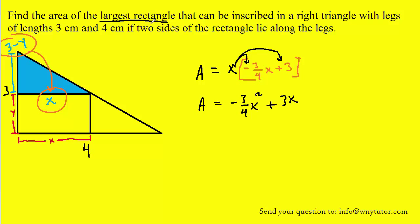And then, since we're trying to find the largest rectangle, we're trying to optimize. In other words, we're going to have to take the derivative of both sides of this equation. The derivative of the area we can symbolize as A prime. The derivative of the right side will incorporate just a few basic rules. We'll use the power rule to drag this exponent down and multiply by the coefficients, so that'll give us negative 6 fourths x. We'll subtract 1 from the exponent to give us x to the first. And then the derivative of 3x is just 3. Next, we're going to set this equation equal to 0. Let's subtract 3 from both sides, multiply both sides by 4, and then divide by negative 6. And we get x equals 2.